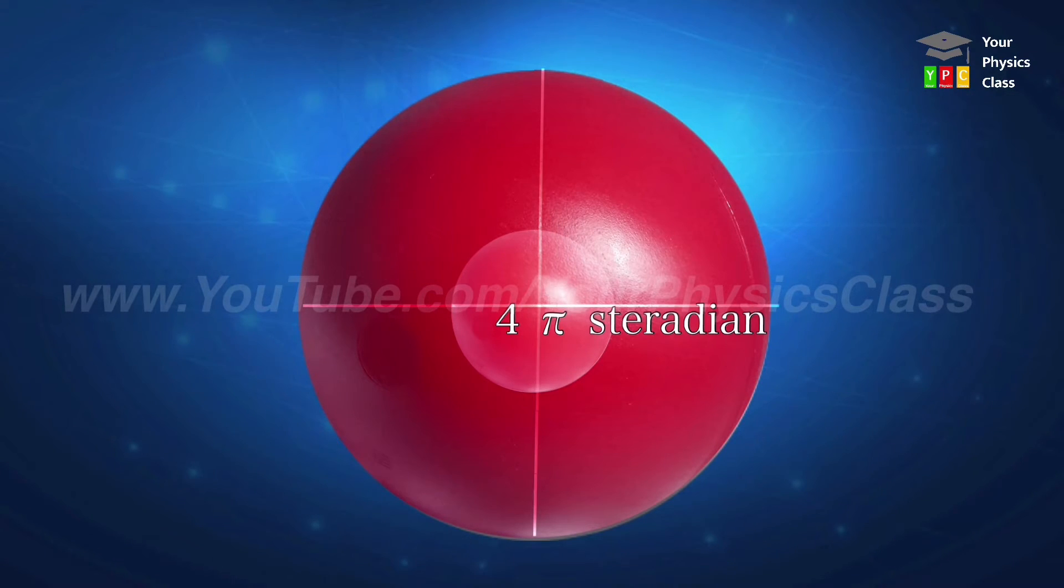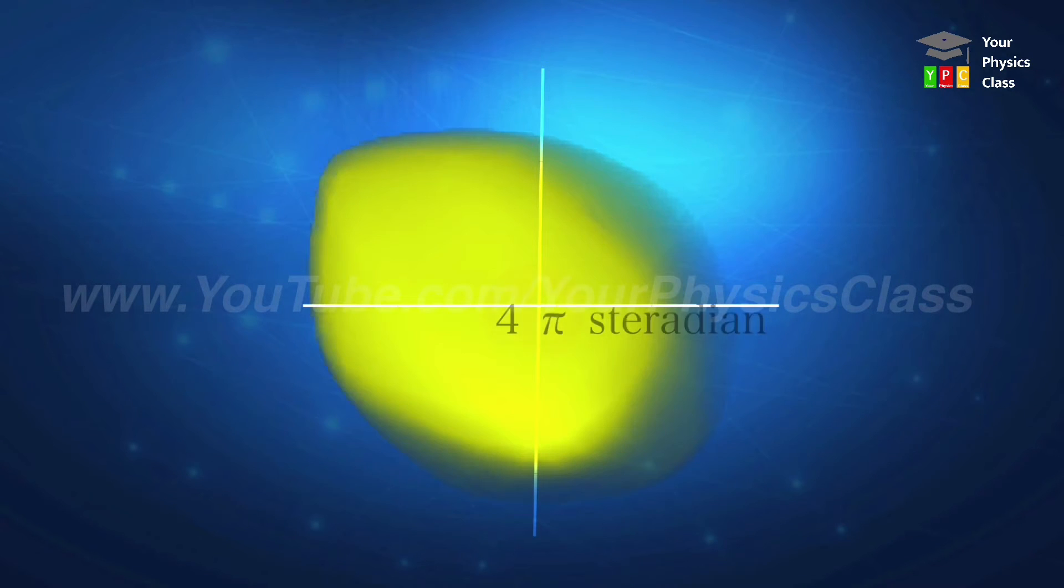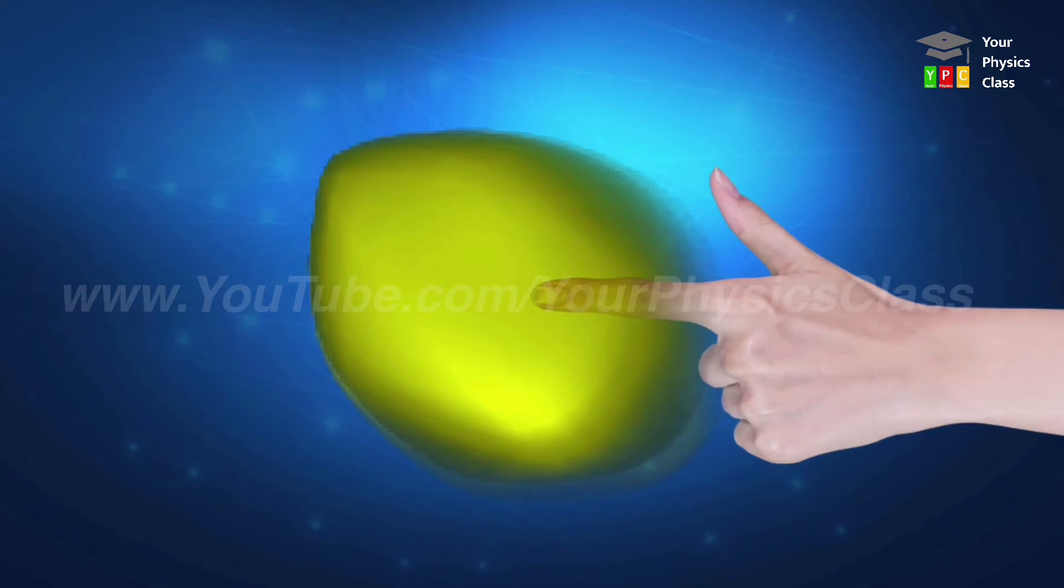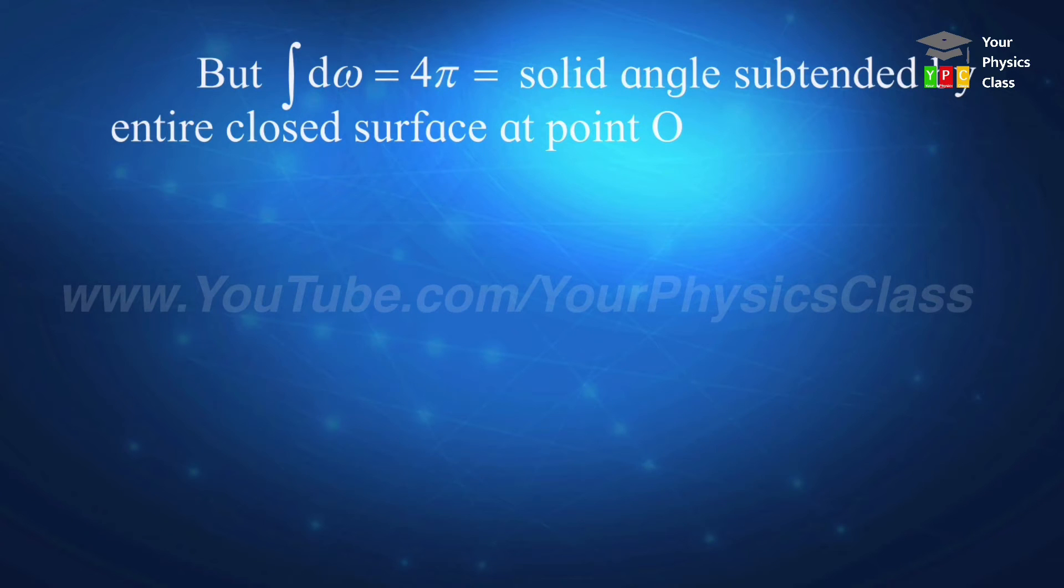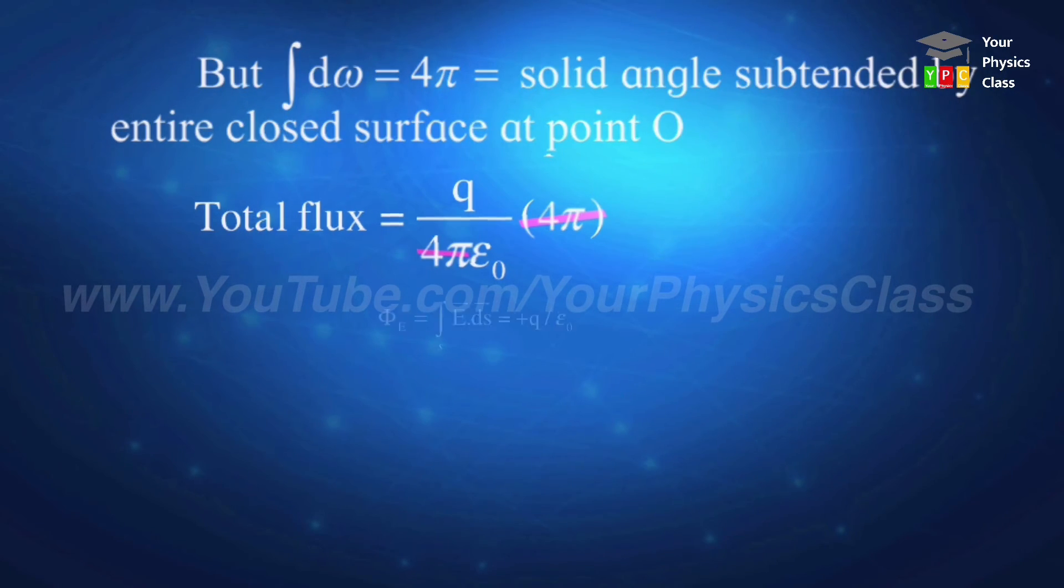This applies to all cases, whether it is a sphere or any shape. Even for any arbitrary shape, if we consider, inside the arbitrary shape at a point, total solid angle subtended by this entire surface would be four pi steradian. So this means integration of d-omega gives us four pi steradian and we need to substitute it there. So after substituting, we get total flux equals q upon four pi epsilon zero times four pi. Friends, this four pi cancels, so I will cancel it. Total flux I get is q upon epsilon zero.